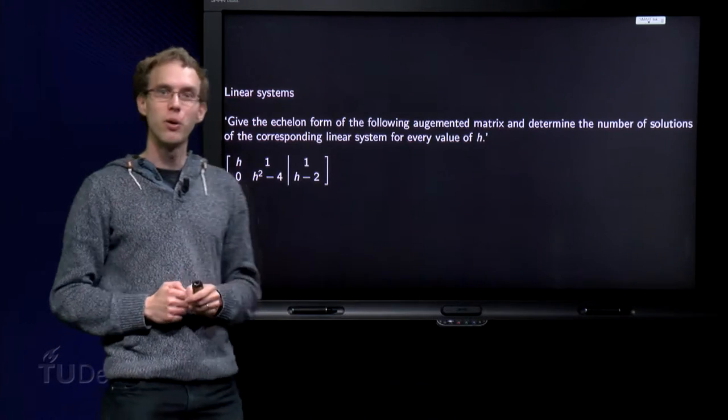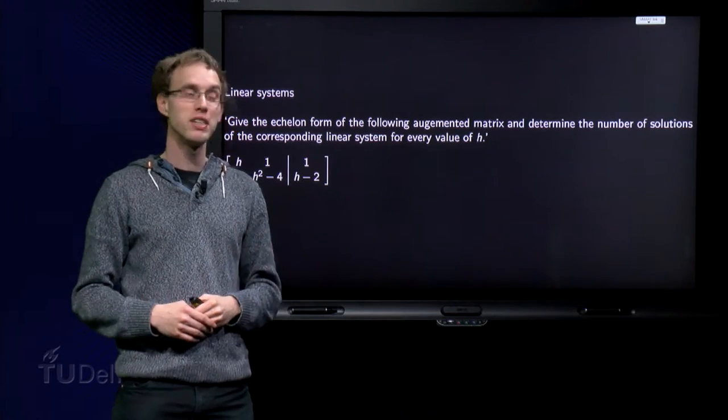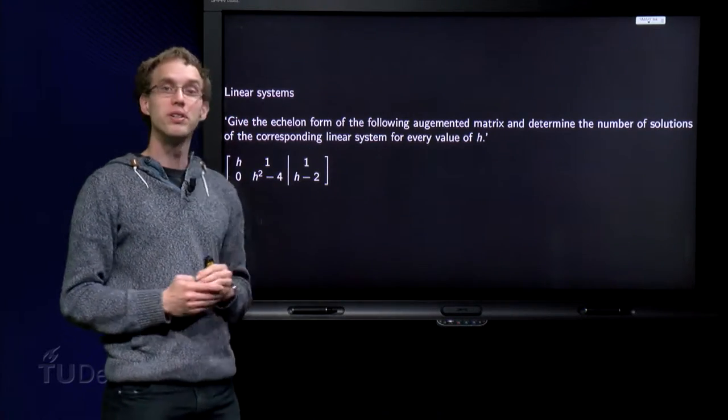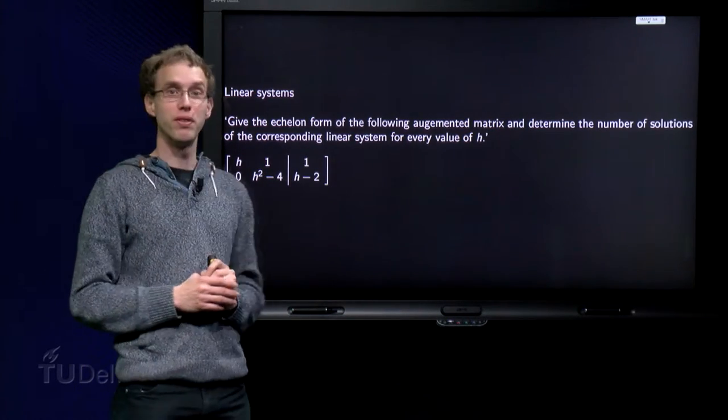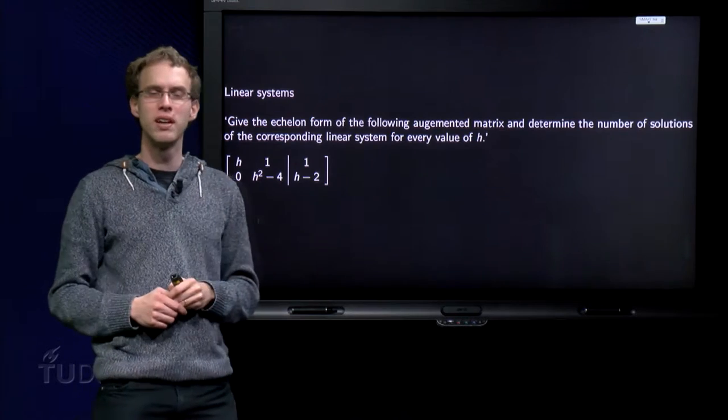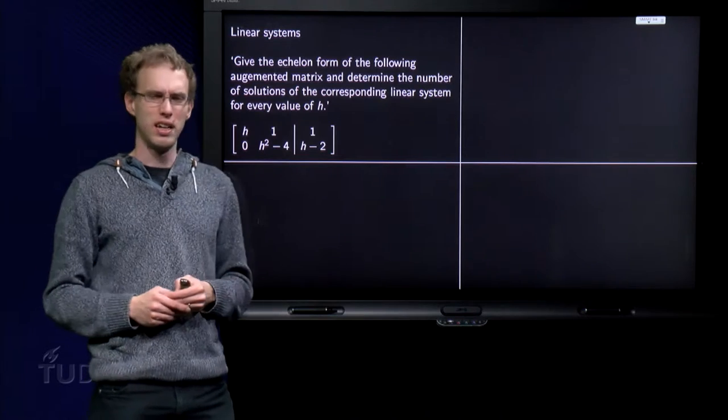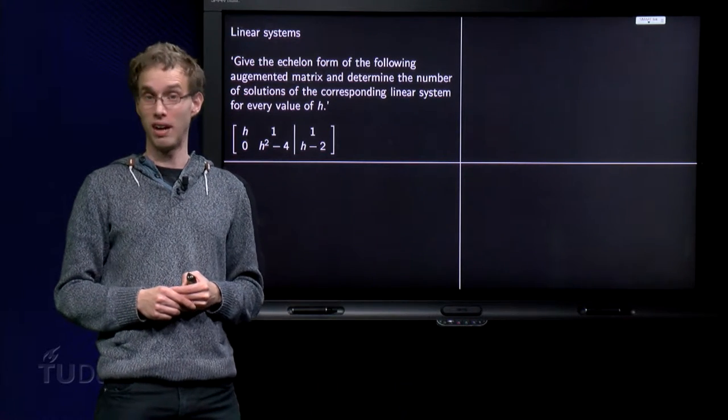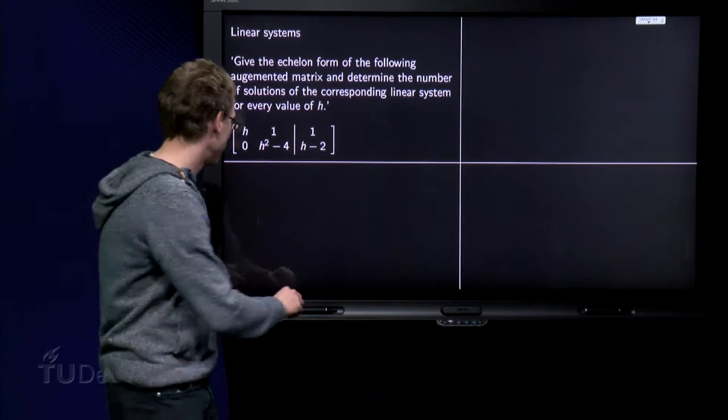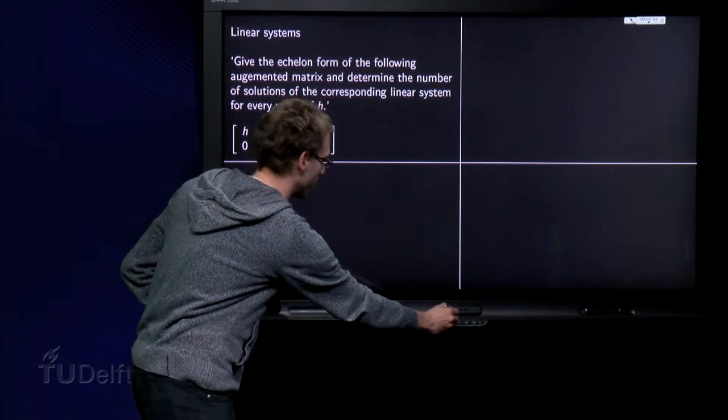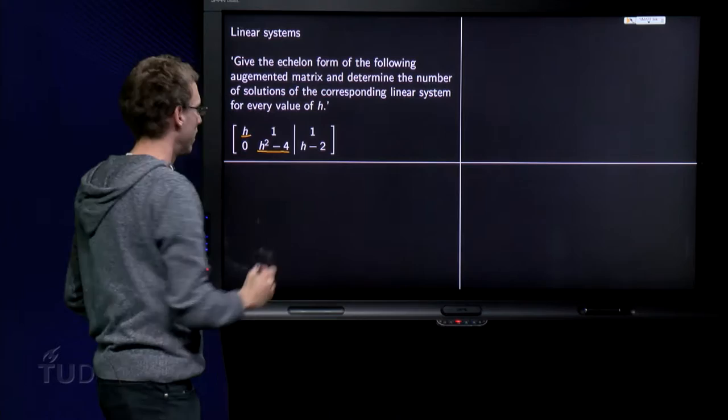So, here we have the exercise. Give the echelon form of the following augmented matrix and determine the number of solutions of the corresponding linear system for every value of h. So we have our linear system and it looks quite trivial. It seems to be already an echelon form, right? We have to be a bit careful here, because do we really have pivots over here and over there?